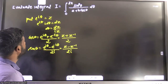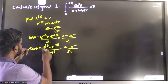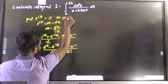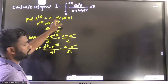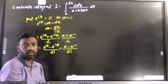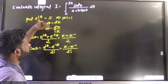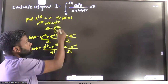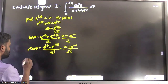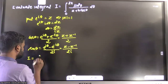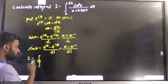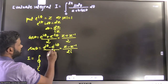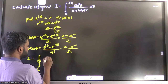In place of sine theta we put (z − z⁻¹)/(2i). Note that putting e^(iθ) = z implies mod z equals one, meaning this is a circle of radius one. So we are converting this integration into a complex integration on a unit circle. The contour is the unit circle.